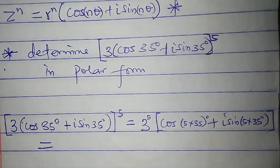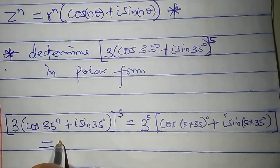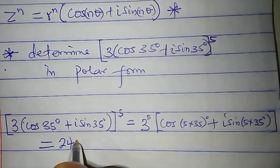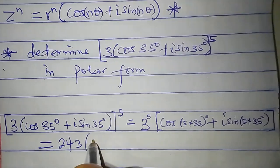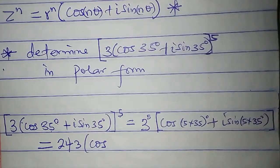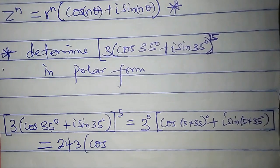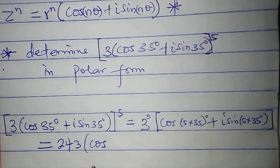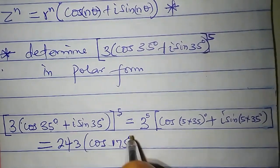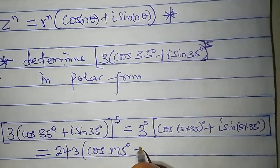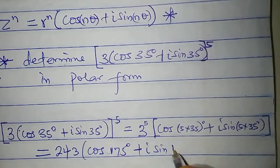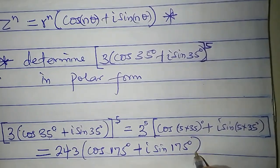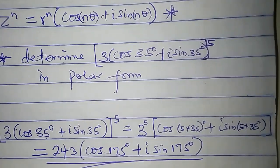3 to the power of 5 is 243, 5 times 35 is 175, so we have cos 175 degrees plus i sine 175 degrees. This is it.